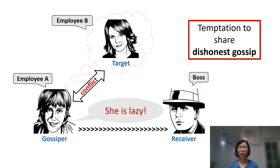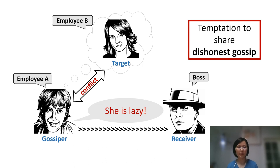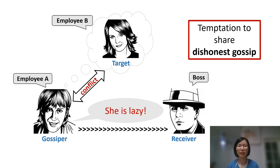However, an important barrier to gossip serving its functions is that people may have the temptation to share dishonest gossip for personal benefit. For instance, in a company where the boss decides to promote employee A or employee B, employee A may share dishonest negative gossip about employee B if there is a conflict of interest between these two. Examples like this abound in everyday life.